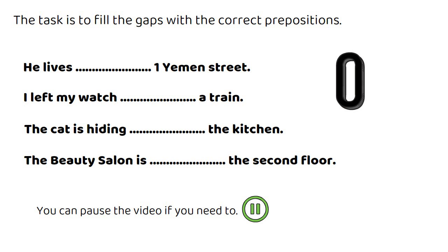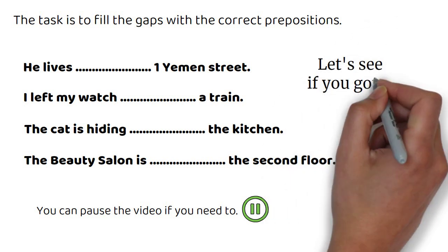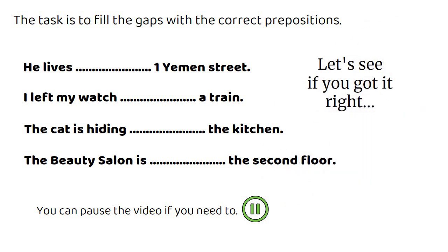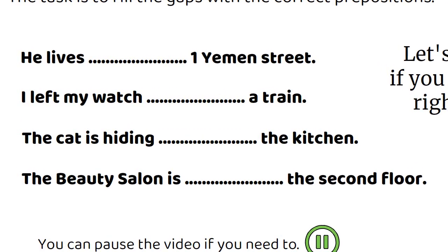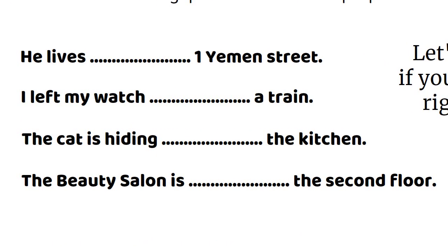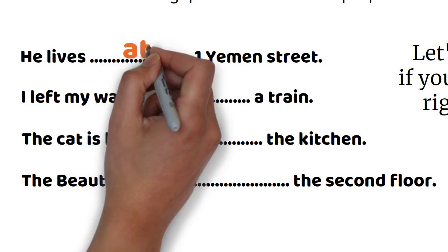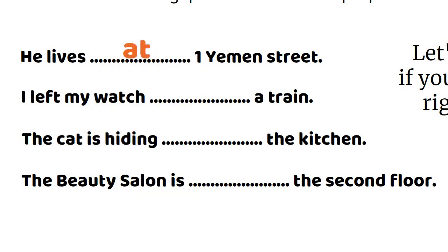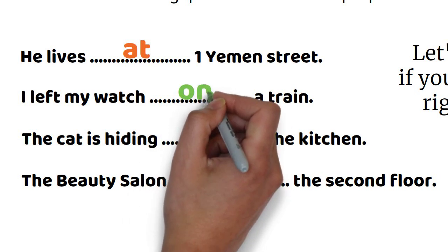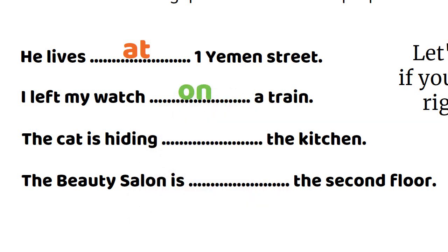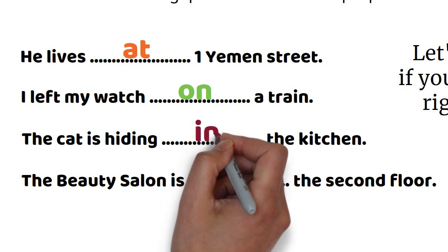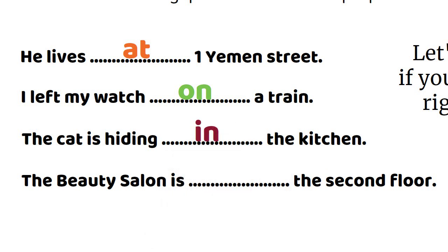Alright, the time is up. Let's check if you got it right. Here are the sentences filled with the correct prepositions. He lives at one Yemen Street. I left my watch on a train. The cat is hiding in the kitchen. The beauty salon is on the second floor.